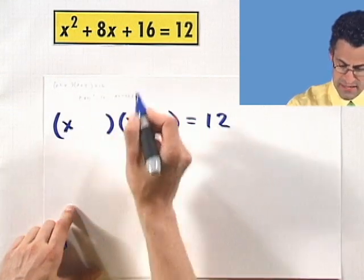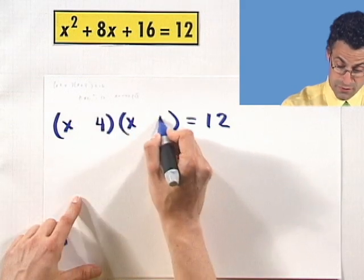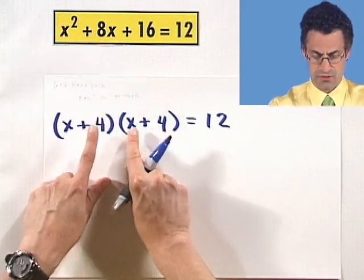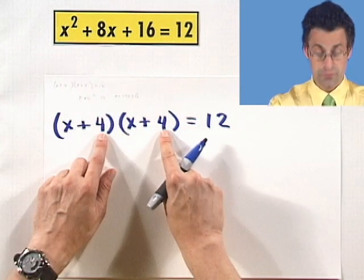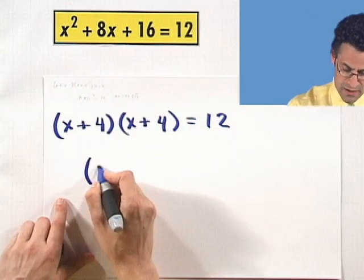Well, I'll put an x here and an x here, two numbers whose product is going to be 16. Let's try 4 and 4, they both have to be plus, does this work? x times x is x squared, outside is 4x, inside is 4x, that's 8x, 4 times 4 is 16. This actually works. This is actually a perfect square in disguise.